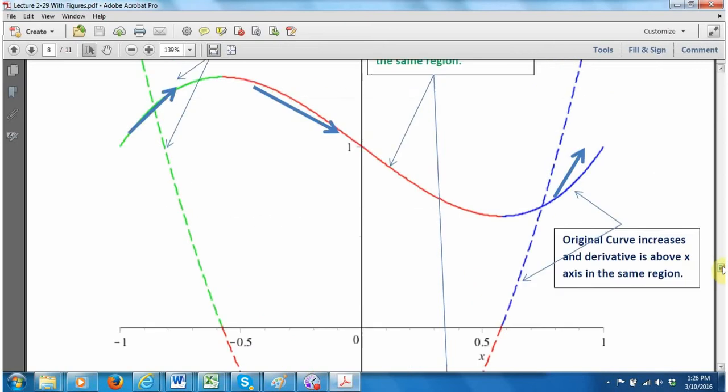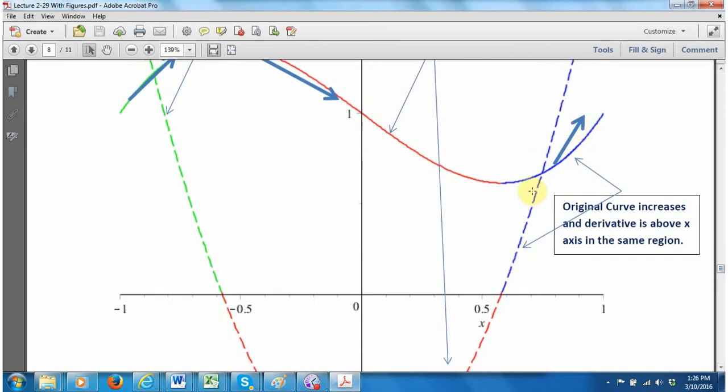And finally, the curve again increases, this is the blue, and you see that right where it's flat is where the derivative crosses the x-axis and now the derivative, the dashed curve, is entirely above the x-axis positive, exactly where the original curve is increasing.